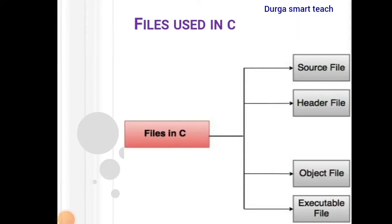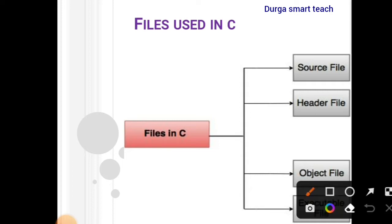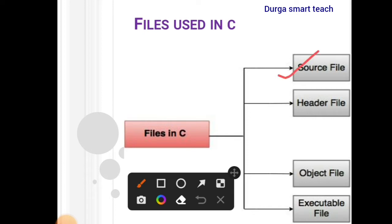Hello students, welcome to my channel. Today I'm going to discuss about files used in C. There are four types of files: source file, header file, object file, and executable file. A source file is nothing but whatever program you've written.